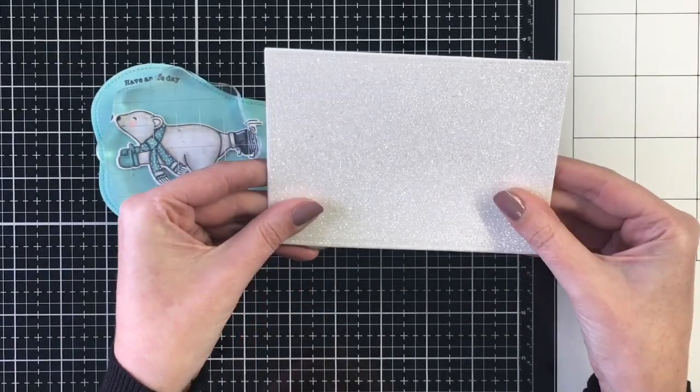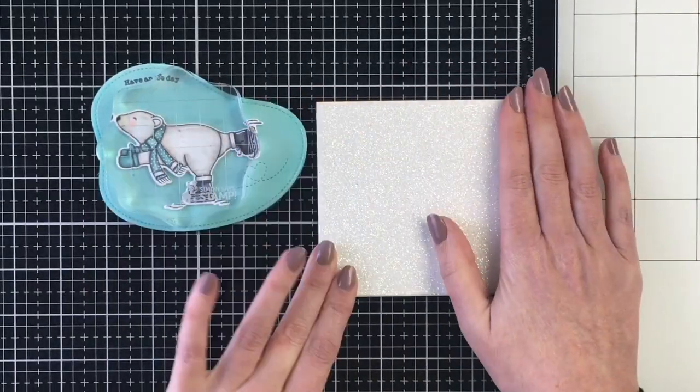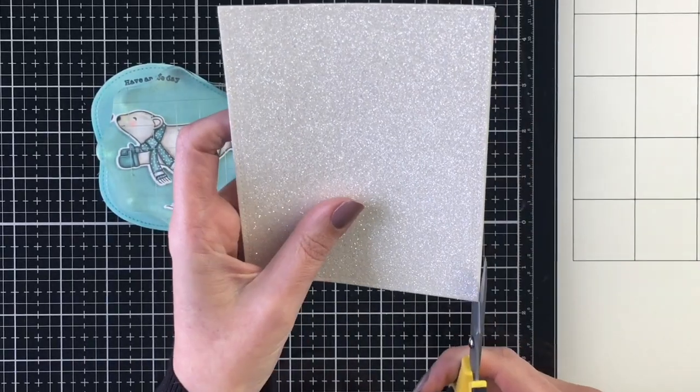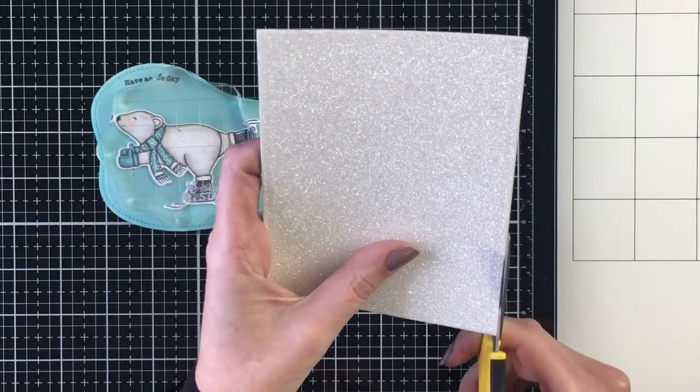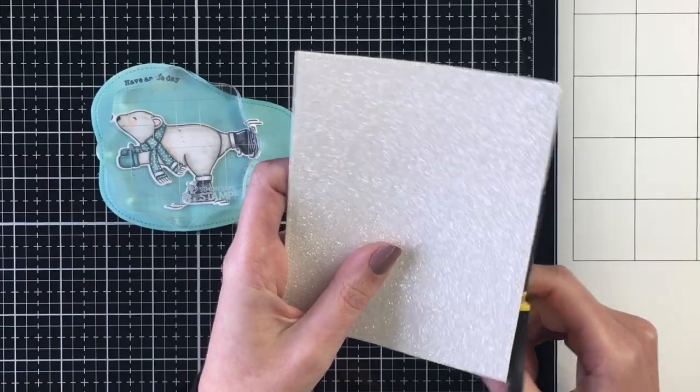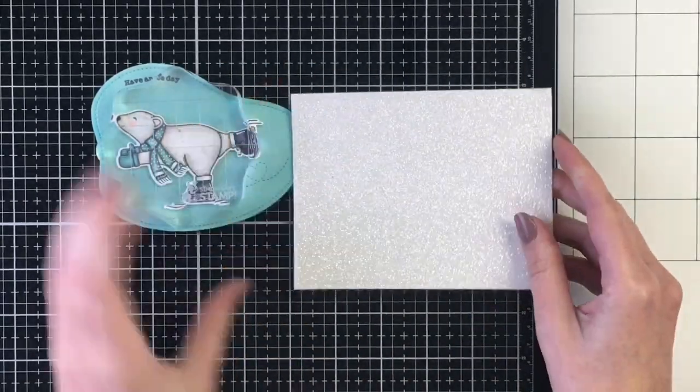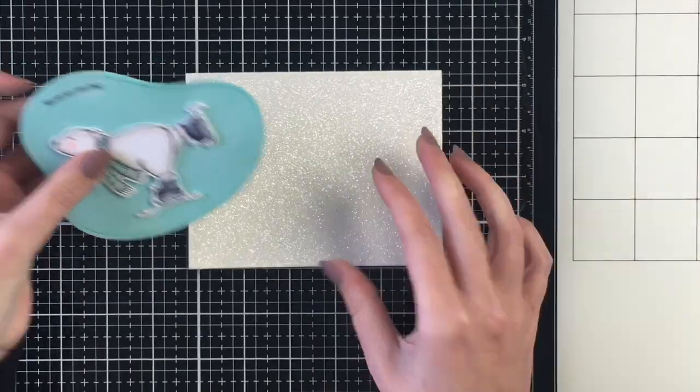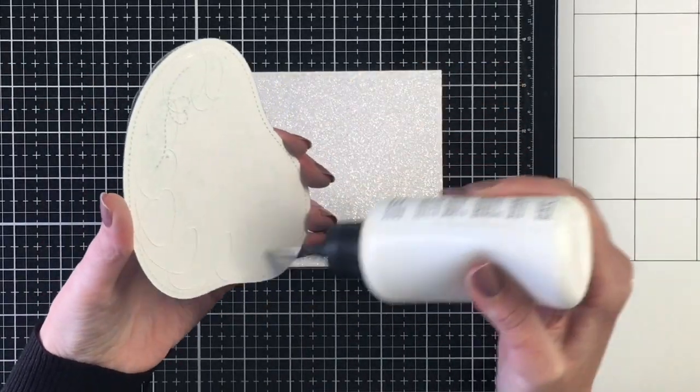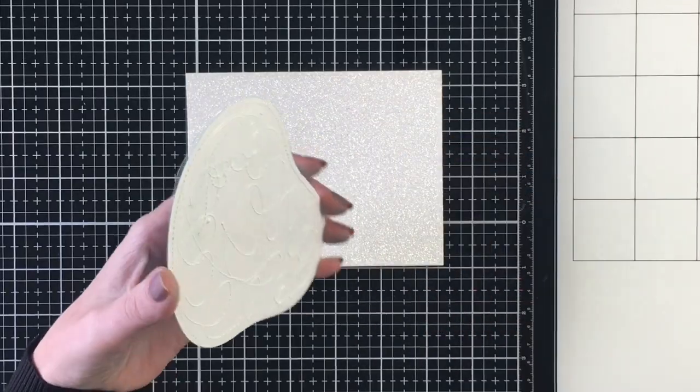So I'll go ahead and adhere that to my card base. This is an A2 size card at 4 1⁄4 by 5 1⁄2. I did need to trim up my card base just a little bit here. And then I can go ahead and adhere my little focal point here of the ice skating pond and our polar bear onto the card.